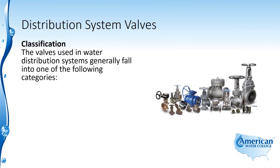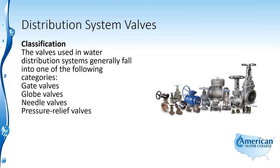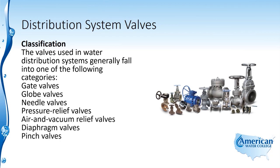The valves used in a water distribution system generally fall into one of the following categories: gate valves, globe valves, needle valves, pressure relief valves, air and vacuum relief valves, diaphragm valves, pinch valves, rotary valves, butterfly valves, or check valves.